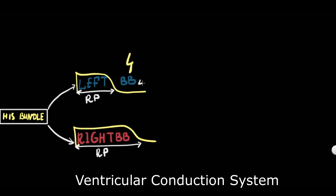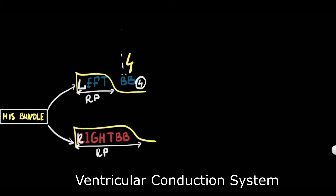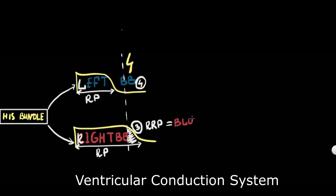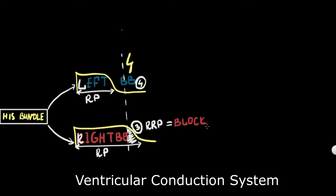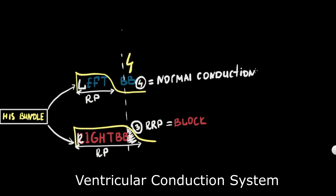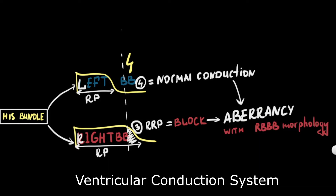If a stimulus arrives at a time when the left bundle branch has come out of its refractory period but the right bundle branch still has a refractory period, the stimulus cannot propagate through the right bundle branch but easily passes through the left bundle branch. As a result, a functional block of the right bundle branch — aberrancy — occurs, and the wide QRS complex has a right bundle branch block morphology.